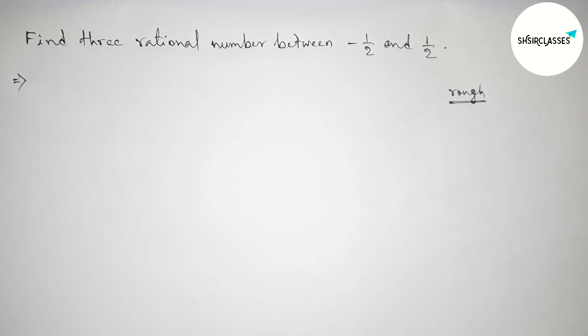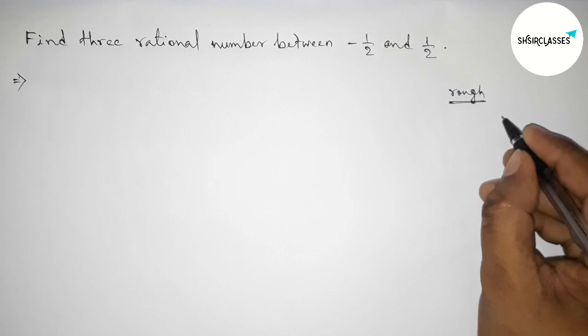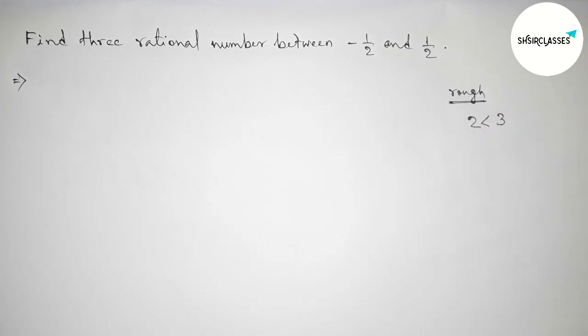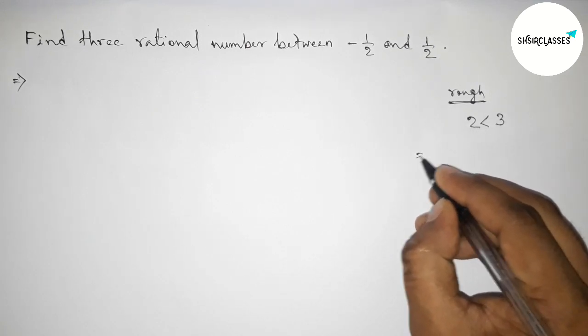So now taking here a number 3 which is greater than 2. Next, taking the inverse of both numbers, then the inequality will be changed.